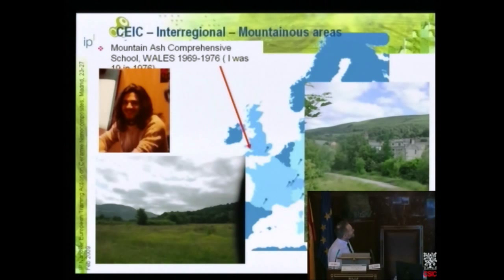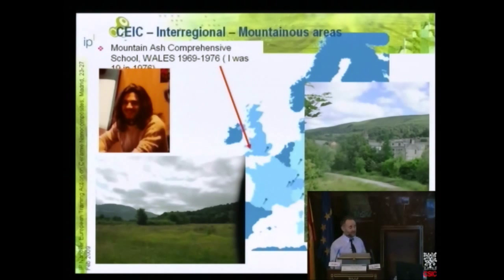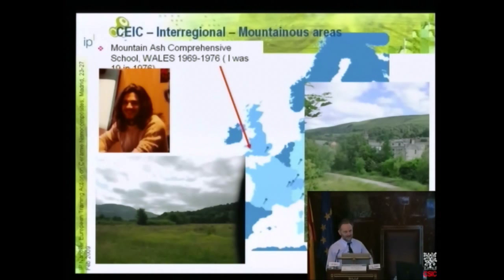Wales is not like Spain. Maybe Oviedo is a little bit more like it, but Madrid is definitely not. Sometimes we see this patch of blue cloud in Wales, and if a British person says 'the weather's going to be good today,' what they mean is you might see some blue sky — you're not necessarily going to get sunshine. So if you come from Madrid, you have to be very careful. Maybe Oviedo — I've not been there yet.